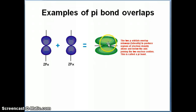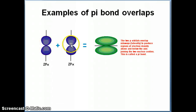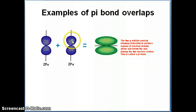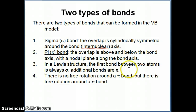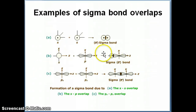As a result, a pi bond does not allow free rotation. If you keep one side fixed and start rotating the other around the bond axis, the bond no longer forms because the positive phase comes down and the negative phase goes up, destroying the pi bond. So there is no free rotation around a pi bond, whereas you can rotate freely around a sigma bond.